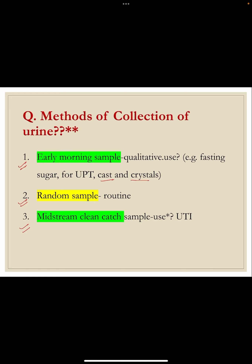The mid-stream clean catch sample is commonly used for bacterial or fungal cultures, collected in a sterile container — used for UTI (urinary tract infection). The patient is asked to clean their genital area before collection. The initial stream is discarded and only the mid-stream portion is collected, which is why it is called mid-stream clean catch sampling.